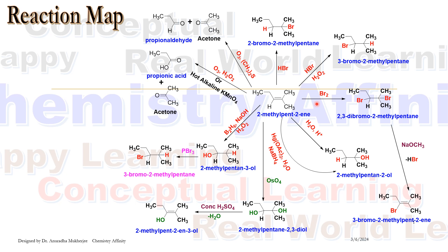Next reaction is the bromination of the alkene molecule. Here we are getting vicinal dihalide. Now this vicinal dihalide can be treated with a strong base like sodium methoxide. Here HBr will be leaving — Br from the right hand side carbon and hydrogen from the left hand side carbon leaving as HBr — and we get an alkene molecule. It is 3-bromo-2-methyl pent-2-ene.